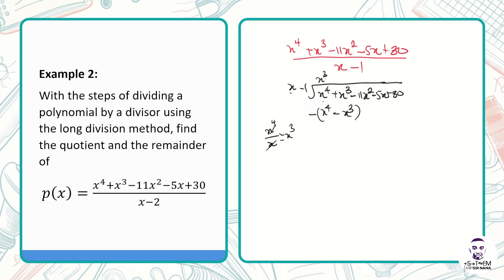We subtract: x⁴ - x⁴ cancels out. Then x³ minus (-x³) gives us plus, so we have 2x³. We bring down the remaining terms: -11x² - 5x + 30.